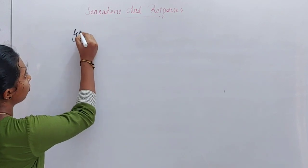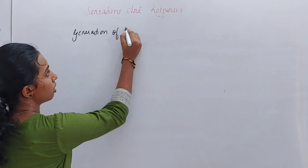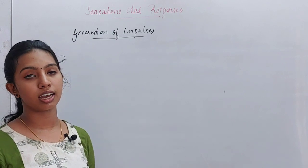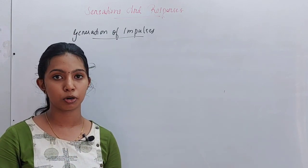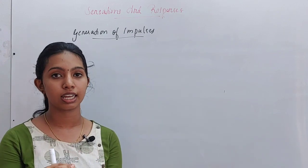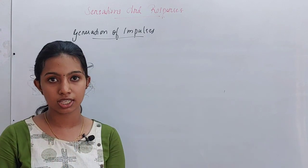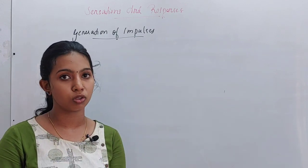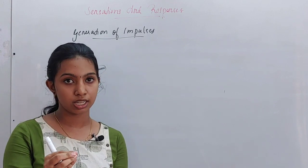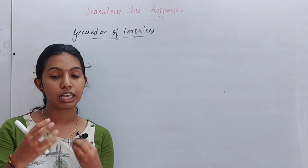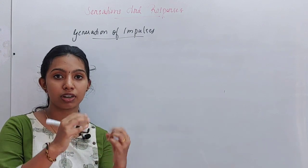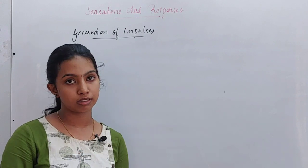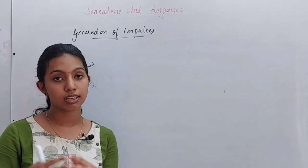What is it? Generation of Impulses. Impulses are messages conducted through neurons. The neurons carry signals — that means the messages — through the nervous system. So impulses are messages conducted through neurons.